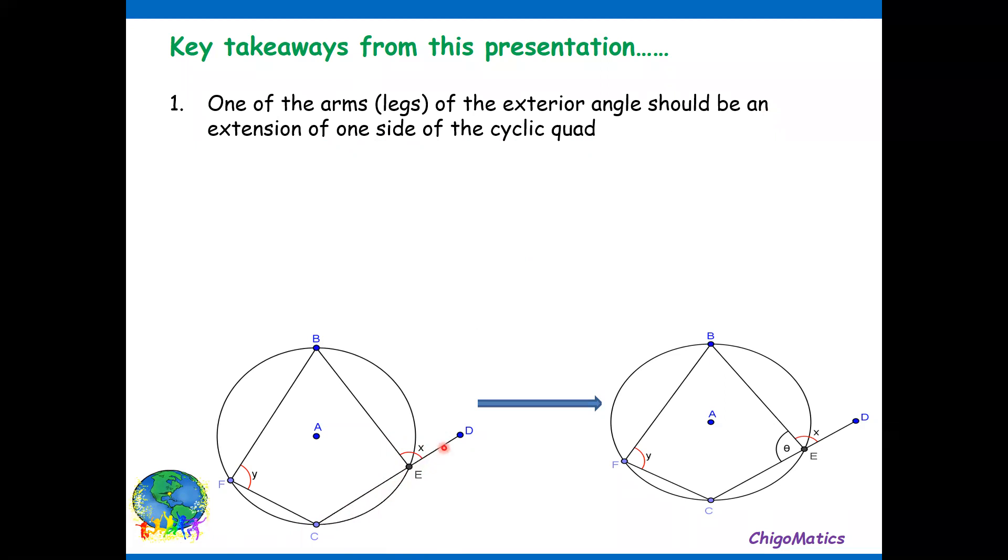To identify an exterior angle, it will be an extension of one of the sides of the cyclic quad. To identify exterior angles, check the extension of each side of the cyclic quad. That means when you have a cyclic quad, to discover if there are exterior angles, all what you need is you analyze side number one, see whether there is an extension. Side E-B, is there an extension? Side B-F, is there an extension?